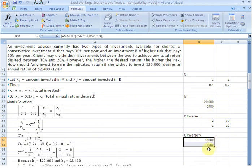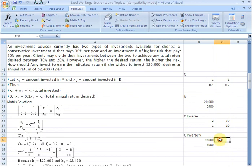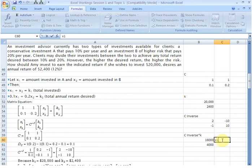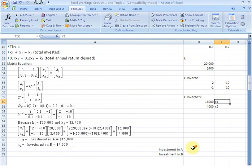And there you have it, $16,000 should go to the first investment A. This was supposed to be X1 and this was supposed to be X2. X1 is the amount of money to go to A and X2 is the amount of money to go to B. So this is the same answer that we arrived at here.